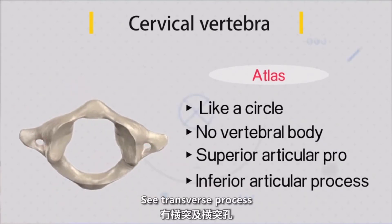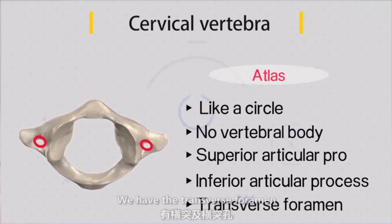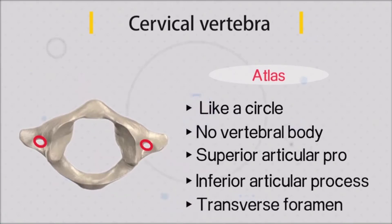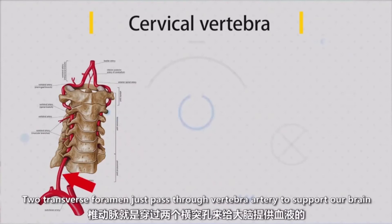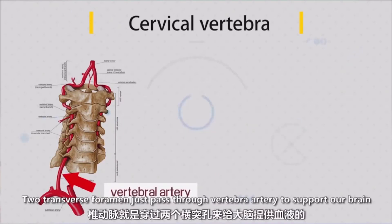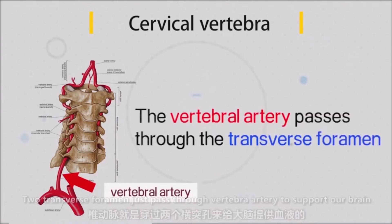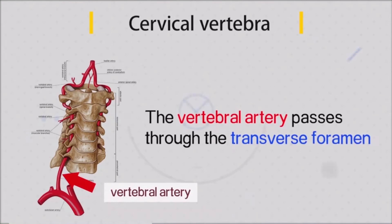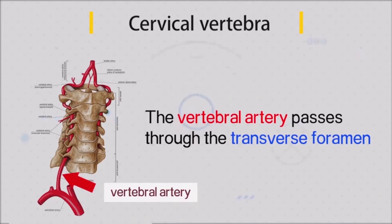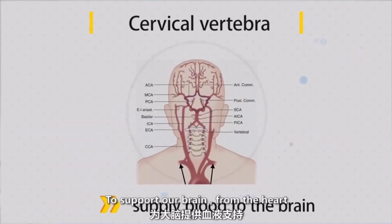The transverse process has the transverse foramen. The two transverse foramina allow the vertebral artery to pass through, to supply blood to our brain.